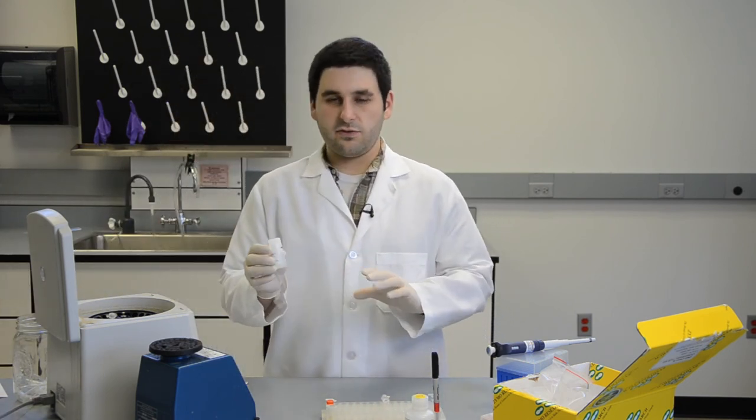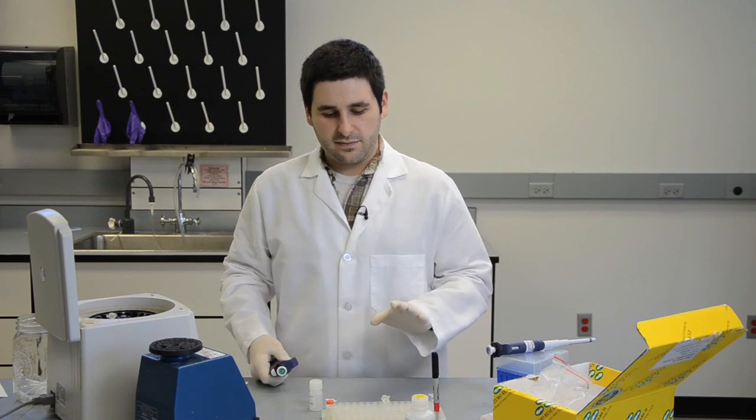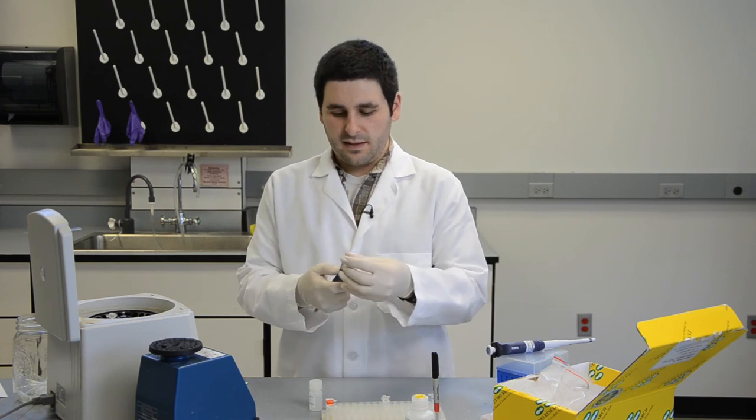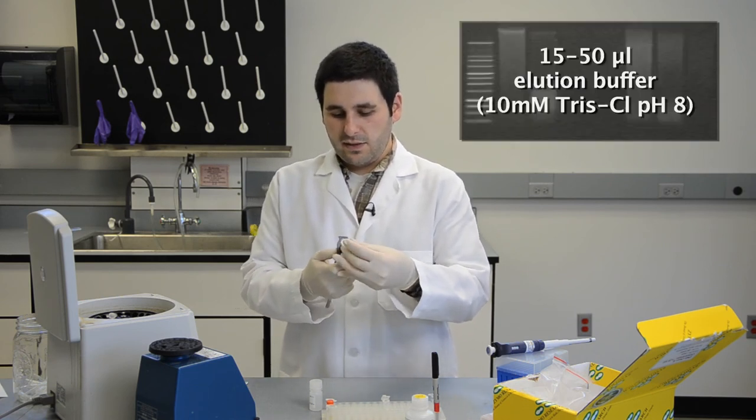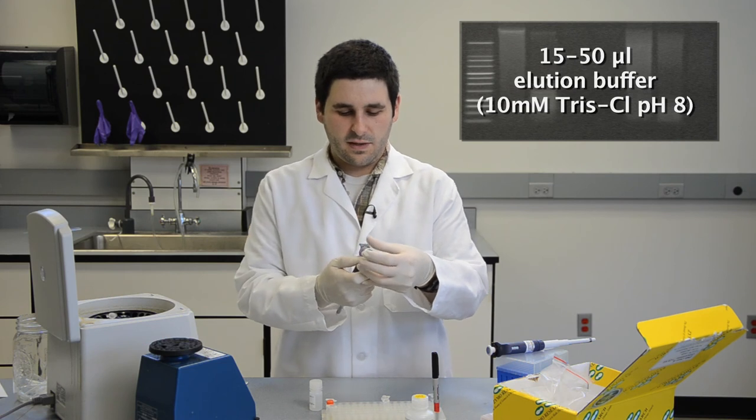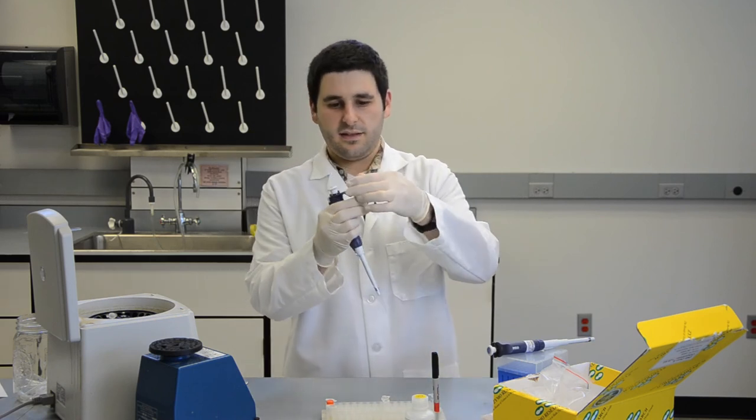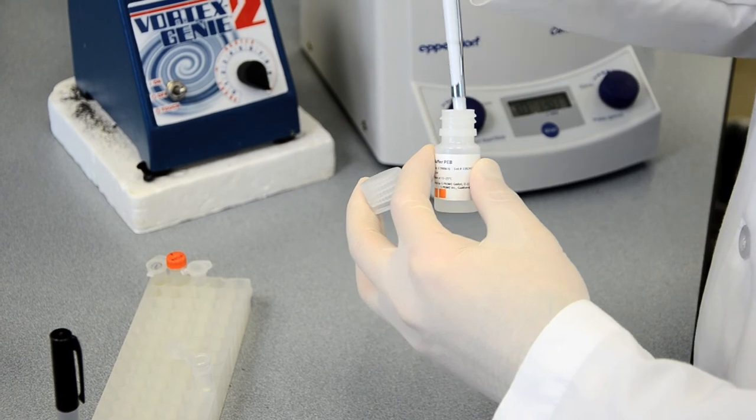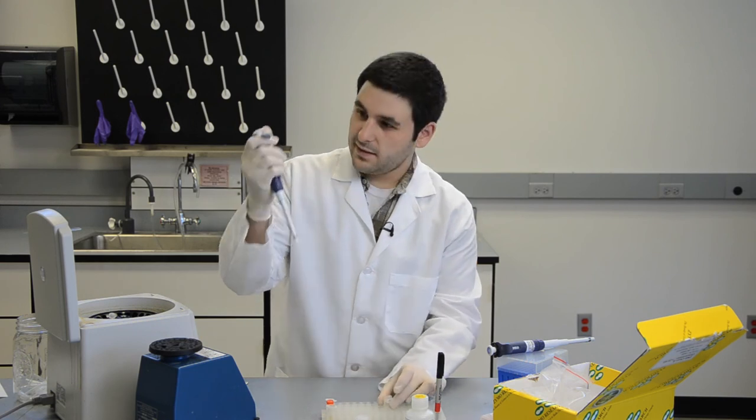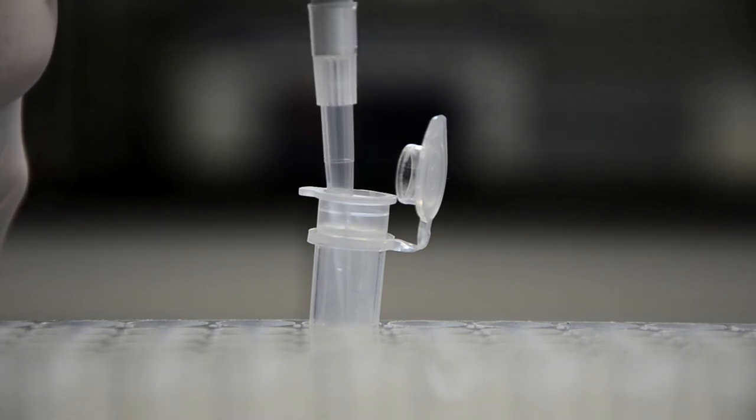I'm using a Tris buffer. You can also use water as well, but you want to make sure you elute enough to have a good amount of DNA. You can elute either 15 to 50 microliters of DNA. I'm going to do 50 because I need as much sample as possible. You just add the elution solution directly to the white membrane filter in your tube.